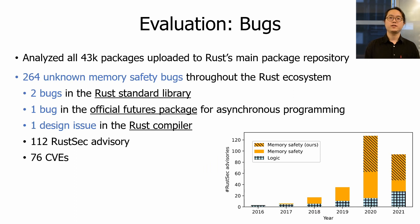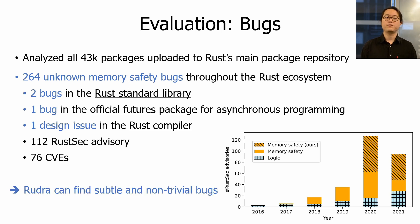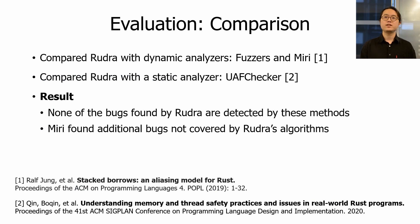The evaluation results are quite promising. We analyzed all 43,000 packages uploaded to Rust's main package repository and found 264 unknown memory safety bugs throughout the Rust ecosystem, including many in codebases written and extensively reviewed by Rust experts, indicating that the bugs found by Rudra are subtle and non-trivial. They also resulted in 112 Rust Security Advisories and 76 CVEs, representing more than half of the memory safety bugs known to the Rust Security Advisory Database since it started tracking Rust bugs in 2016. We also compared Rudra with dynamic analyzers — fuzzers and MIRI — and a static analyzer, UAF Checker from PLDI 2020. None of the bugs found by Rudra were detected by these methods, indicating that Rudra finds unique bugs. MIRI also found additional bugs not covered by Rudra, indicating they are complementary.